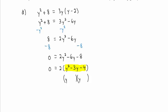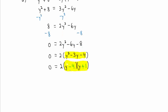Those numbers are negative 4 and positive 1. So the equation reads 0 equals 2 times y minus 4 times y plus 1. We set each variable factor equal to 0. y minus 4 equals 0. Adding 4 to both sides, we get y equals 4.